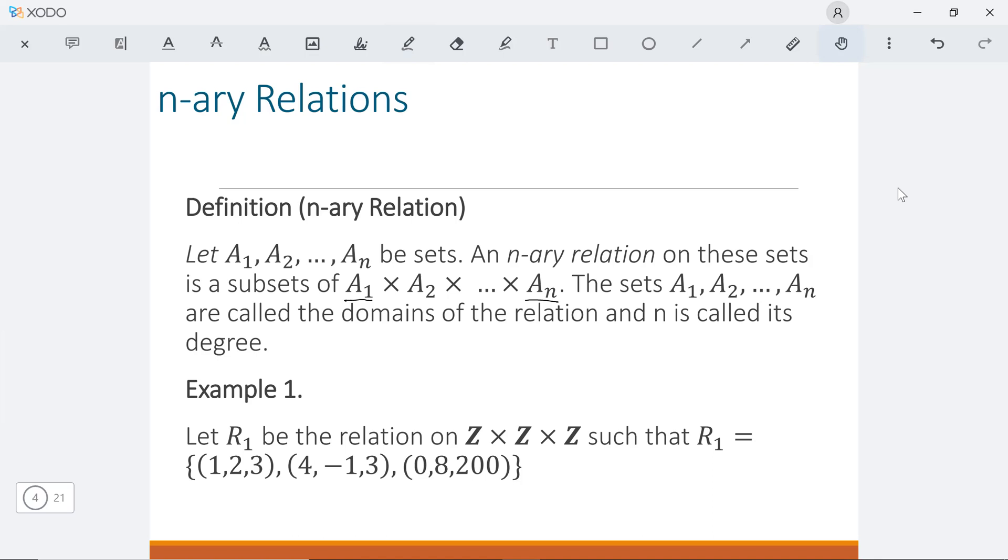We have (1, 2, 3), which is our first element. We have (4, -1, 3). All three numbers come from our three integer sets. And we also have another element in our relation as (0, 8, 200).